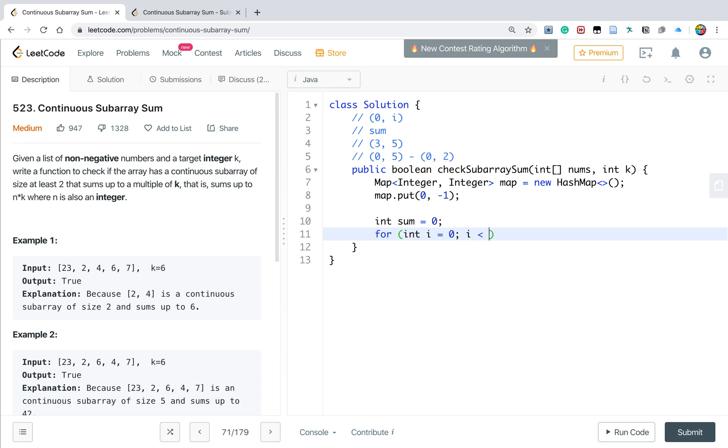We use sum to accumulate, then iterate the array from zero. sum will accumulate the current value, and only when k is not equal to zero, we let sum equal sum modulo k. Otherwise it cannot be done.